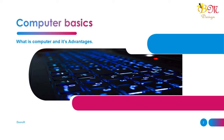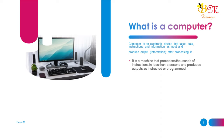What is a computer? A computer is an electronic device that takes data, instructions, and information as input and produces output information after processing it. It is a machine that processes thousands of instructions in less than a second and produces outputs as instructed or programmed.